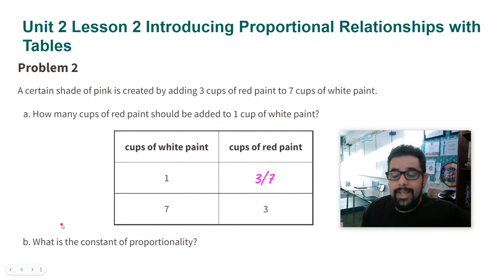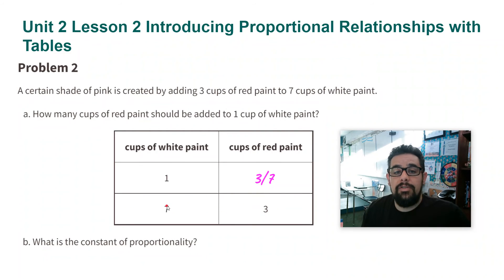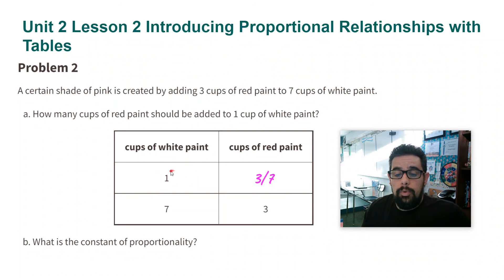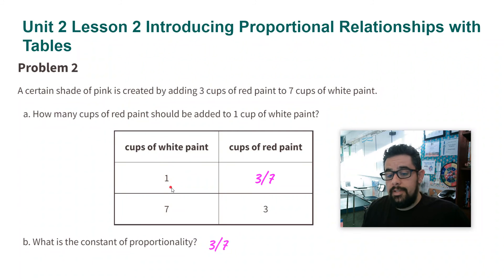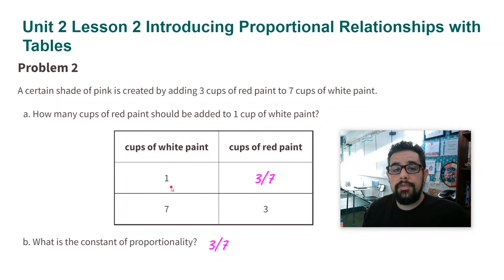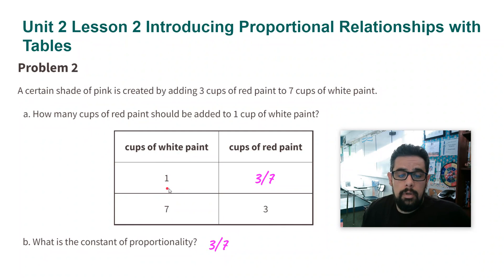What is the constant of proportionality? Remember, when you divide three by seven, that tells you the constant of proportionality. You can also look at it in the row with one — whenever you have one of something, that is the constant of proportionality. So the constant of proportionality here is three over seven. Thank you, ladies and gentlemen.